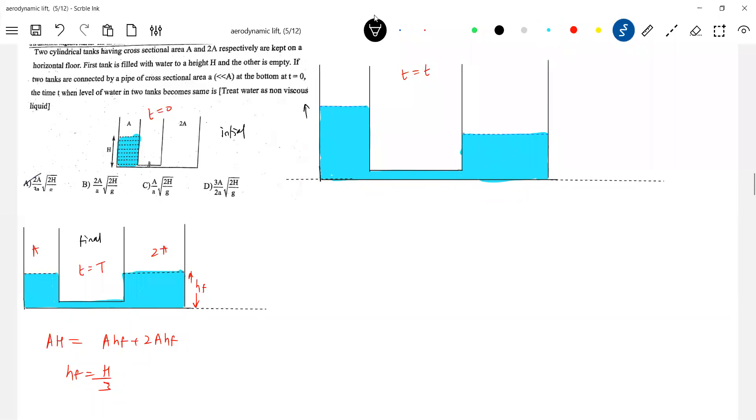I'll call this h, let this be h dash. This is A, this is 2A, the area of cross section here is A, that one. That is what given. Area of cross section here is a small a.